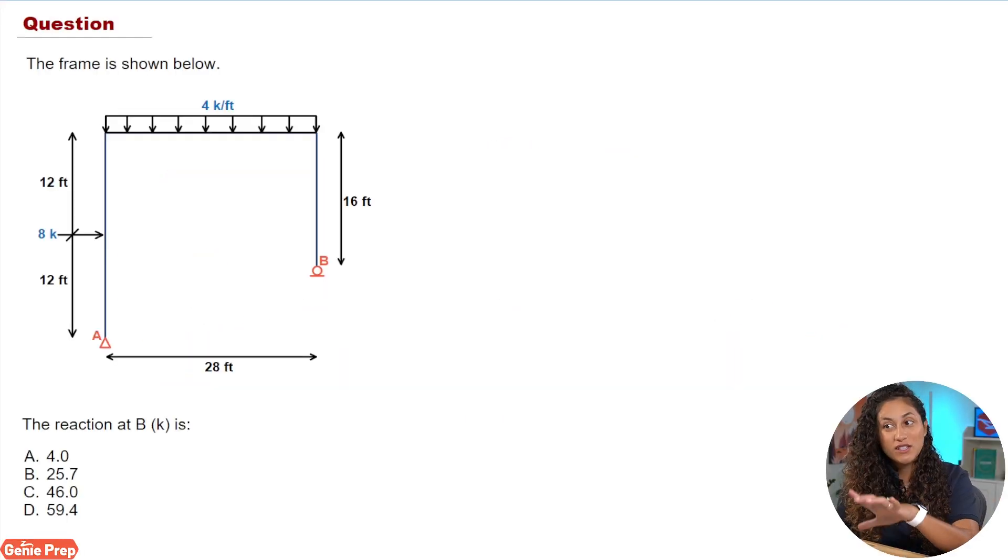We are given this frame and we want to find the reaction at B. Now if we take a look at this frame closely, note that at A we have a pin which means we're gonna have two reaction forces AY and AX, and at B we're just gonna have one reaction force which is BY and that's what we're actually trying to determine.